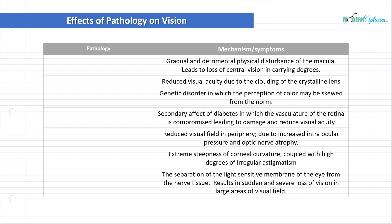So let's go. First, macular degeneration: gradual and detrimental physical disturbance of the macula, leading to loss of central vision in varying degrees. Macular degeneration equals decreased VA over time. Very important that it is detected early. Cataracts: reduced visual acuity due to the clouding of the crystalline lens, as simple as that. And it increases over time — as the cataract gets worse, vision decreases.